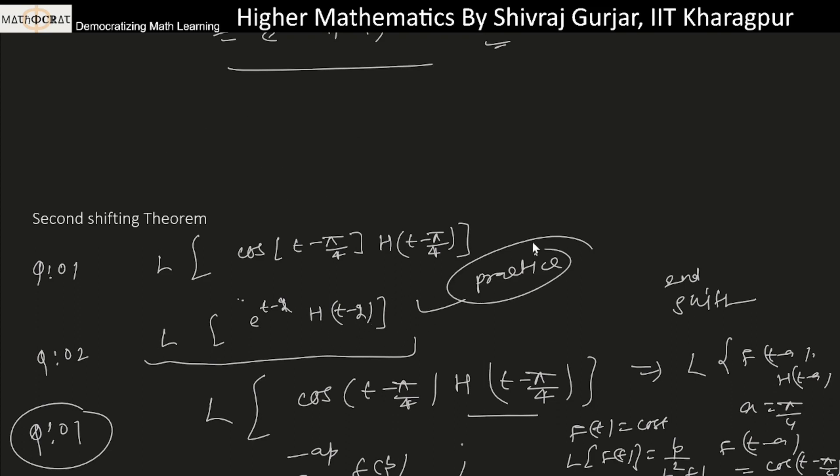For the answer, we can directly write e^(-a) where a is 2, so e^(-2p) times F(p). F(p) is the Laplace of f(t) = e^t, which is 1/(p-1). So this would be the answer.